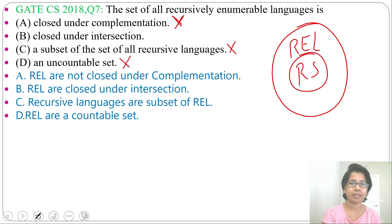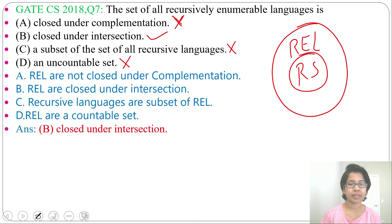So option A is false, option C is false, option D is false — only the correct answer is option B. The answer is closed under intersection. Thank you.